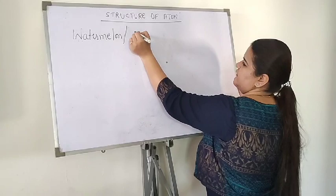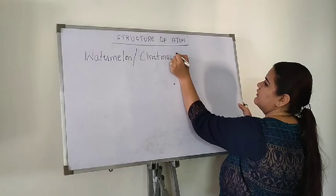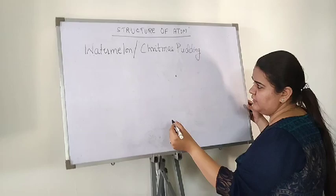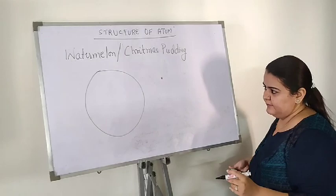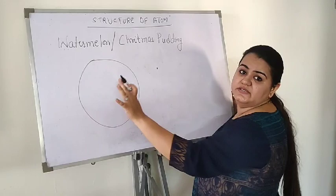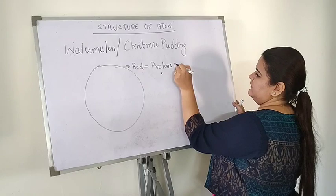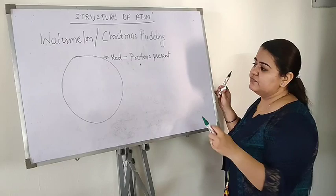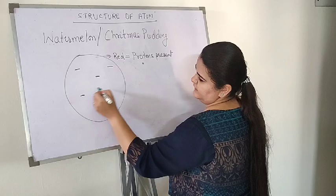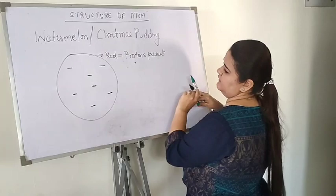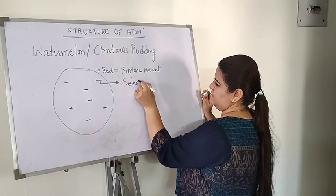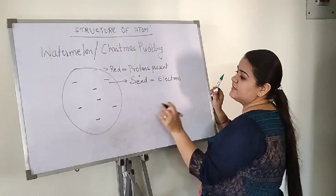If you remember it this way, you are never going to forget what the atom looks like according to J.J. Thomson. This is a cut watermelon or a Christmas pudding. In a watermelon, most of the portion is red — that red colour is equivalent to the protons present in the atom. Whereas the seeds of the watermelon — consider those seeds as the electrons which are present somewhere within the watermelon.